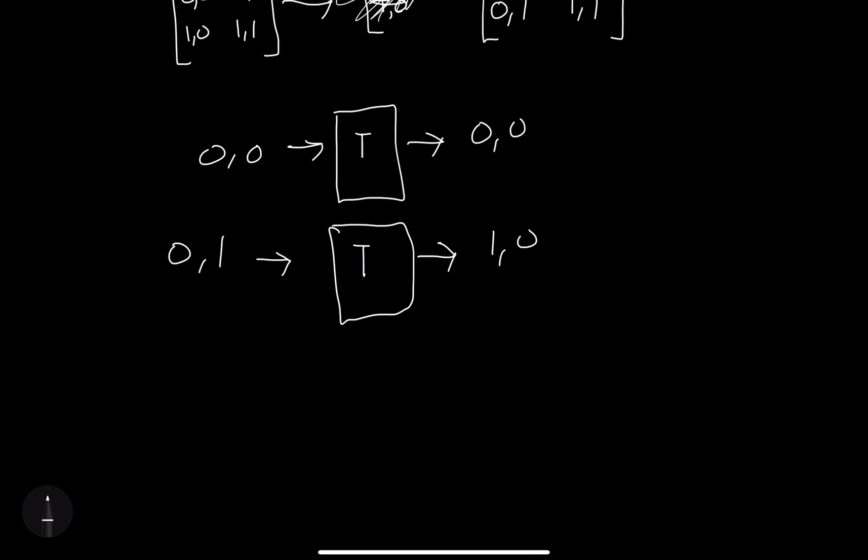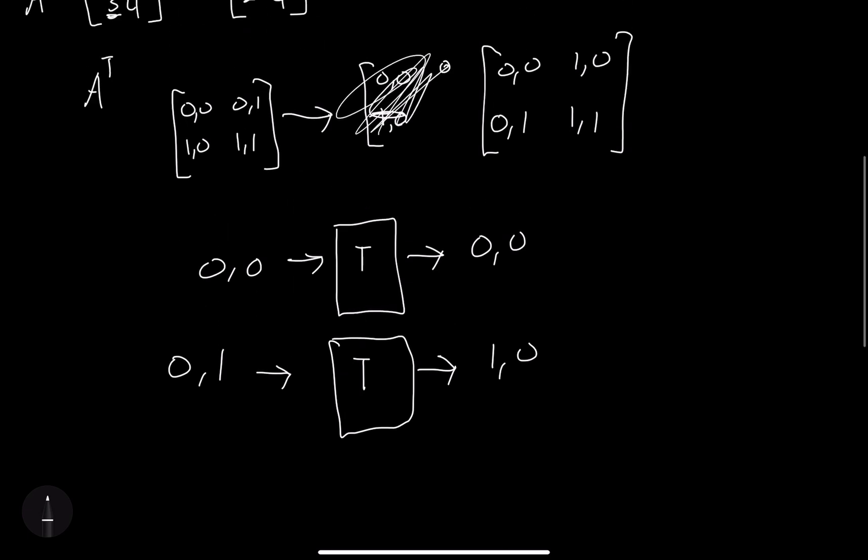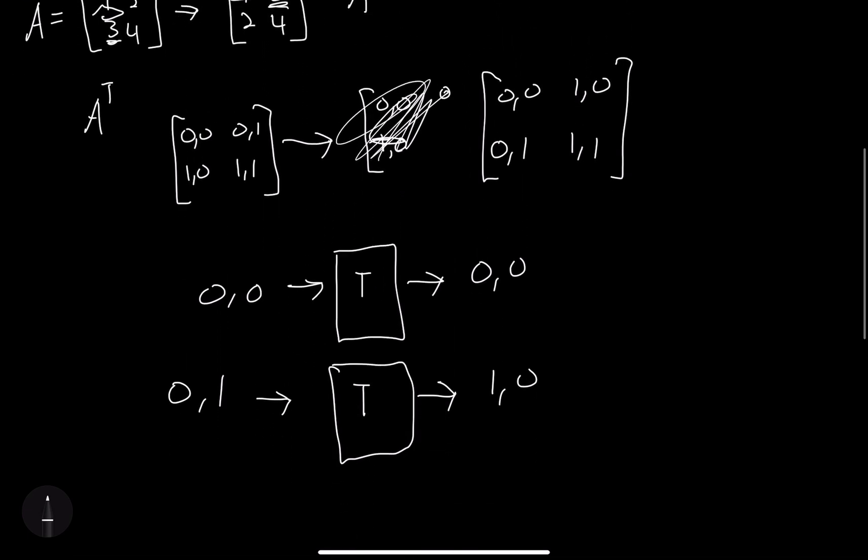So if it's 0,1, we make it 1,0. If it's 0,2, we make it 2,0, and so on and so forth. That's the basic idea of how we would go about programming this.